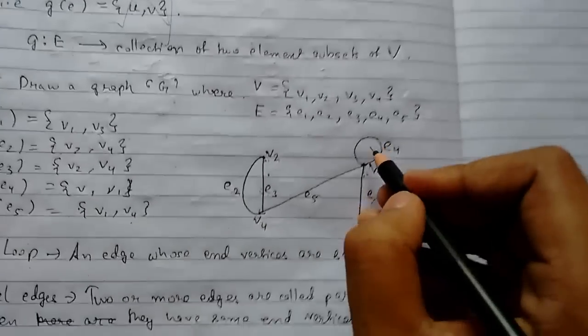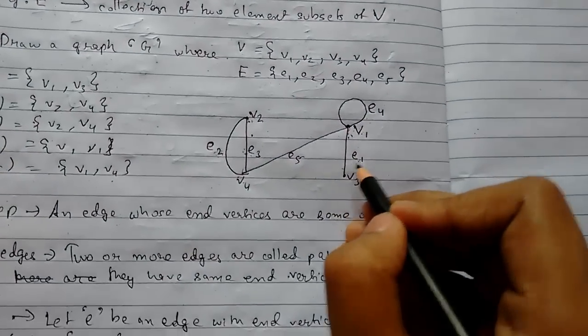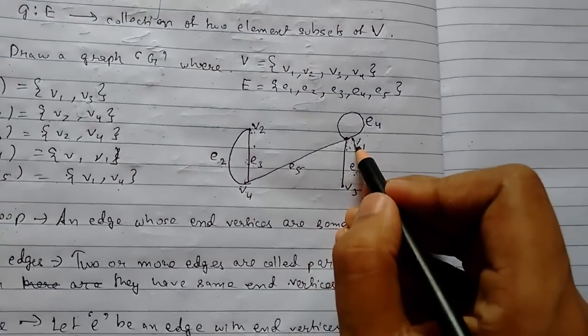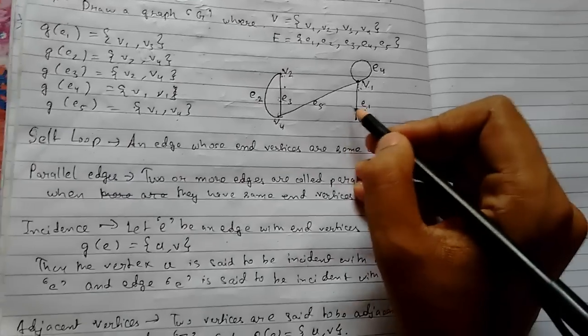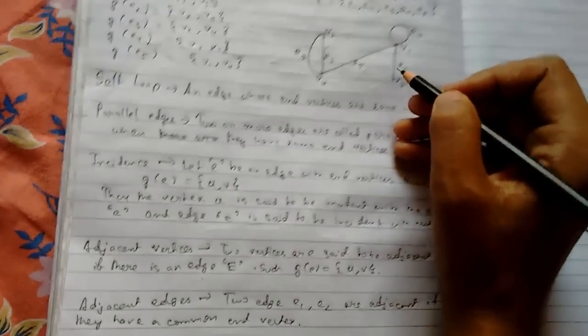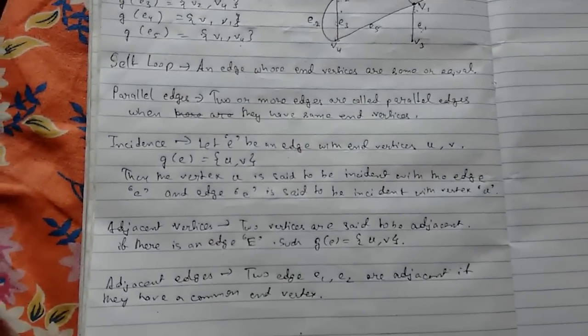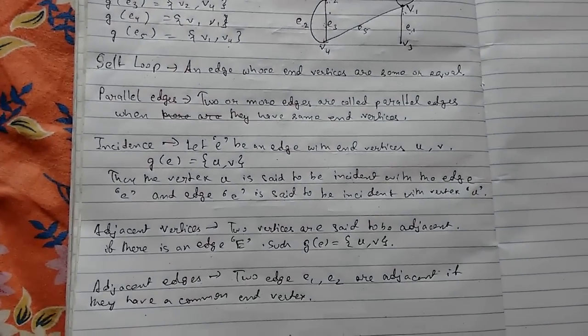Here we see that for two edges e1 and e5, the common vertex is v1. So e1 and e5 are adjacent edges. So these are some basic definitions. Thank you.